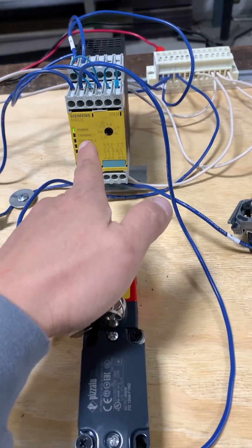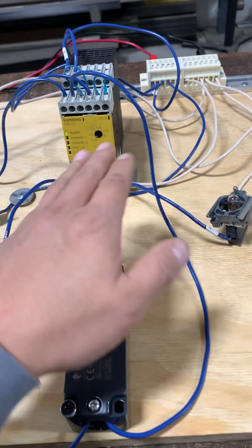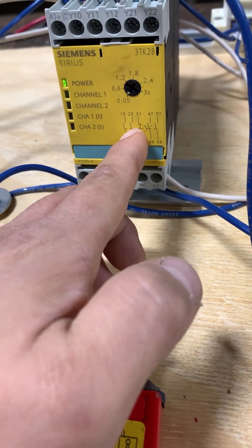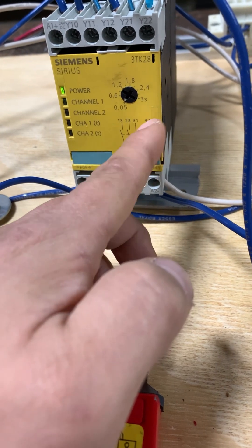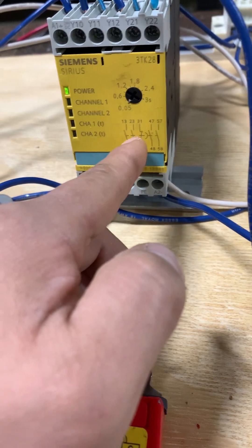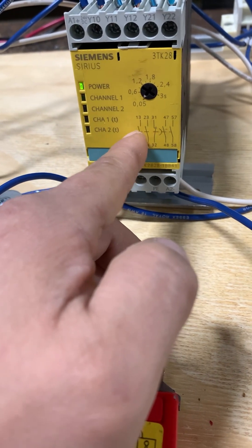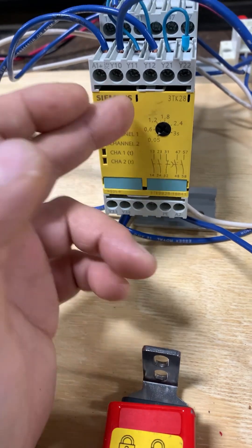After the safety relay completes and all the channels are made, it's going to then close the built-in contacts. This 47 and 45, and 57 over here are time-delayed—you can set it right here. And then all these over here are instantaneous as soon as the safety relay is ready to go.